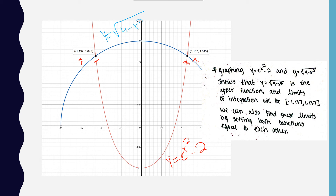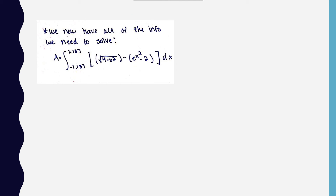If you wanted to, you could also find the limits of integration by setting these two functions equal to each other and solving for x. Now we have everything we need to solve. When you plug it all in, you get the integral from negative 1.137 to positive 1.137 of the upper function, radical 4 minus x squared, minus the lower function, e to the x squared minus 2.